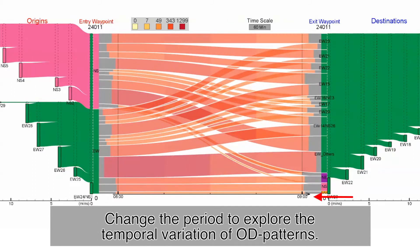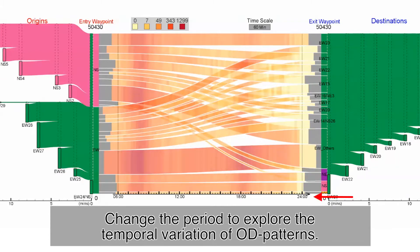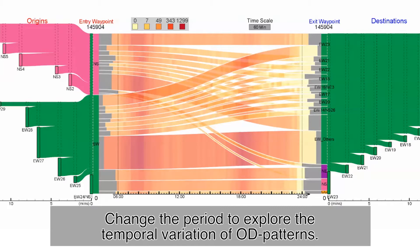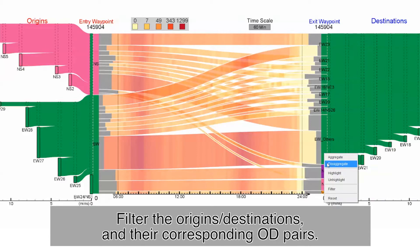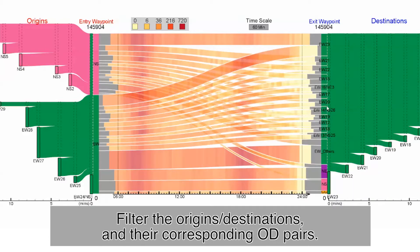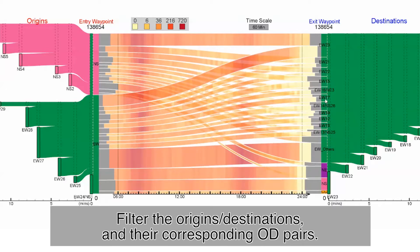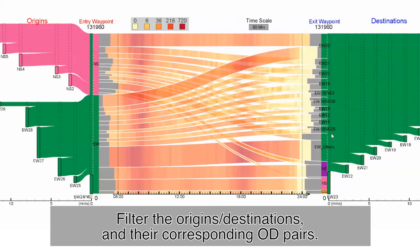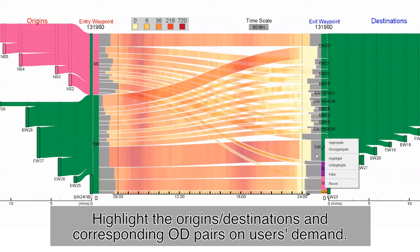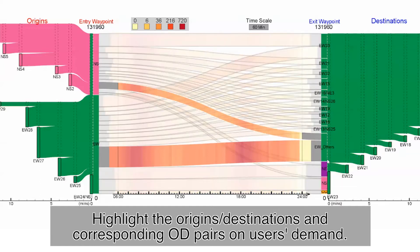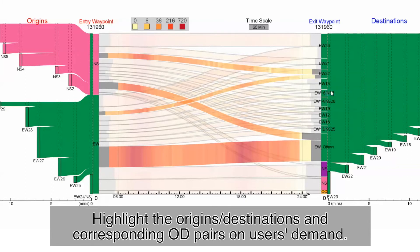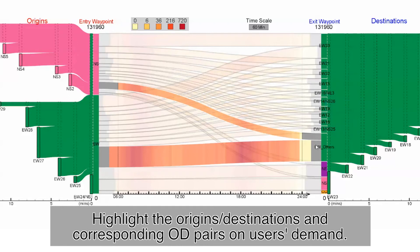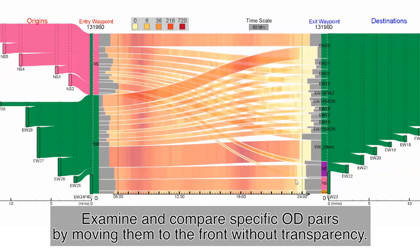Change the period to explore the temporal variation of OD patterns. Filter the origins or destinations and their corresponding OD pairs. Highlight the origins or destinations and corresponding OD pairs on user demand. Examine and compare specific OD pairs by moving them to the front without transparency.